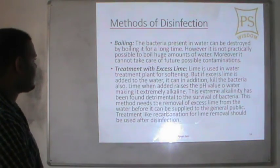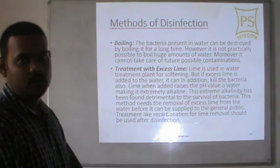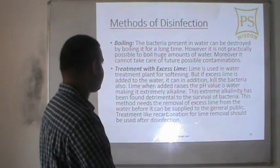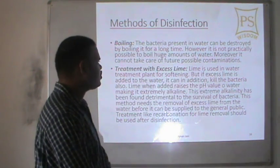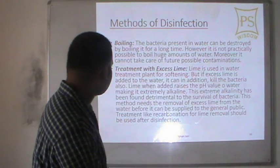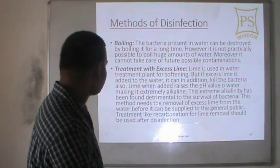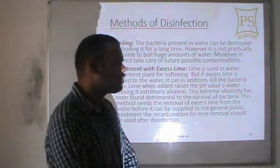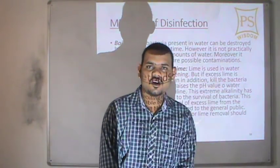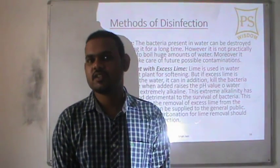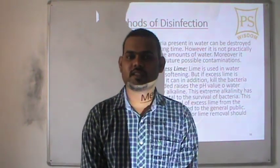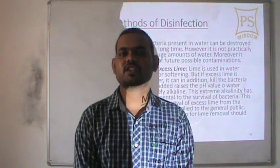The first method of disinfection is boiling. The bacteria present in the water can be destroyed by boiling it for a long time. However, it is not practically possible to boil huge amounts of water. Moreover, it cannot take care of future possible contamination. This is the best method for domestic purposes — domestic disinfection of water.